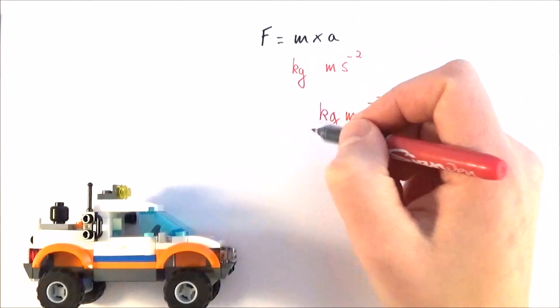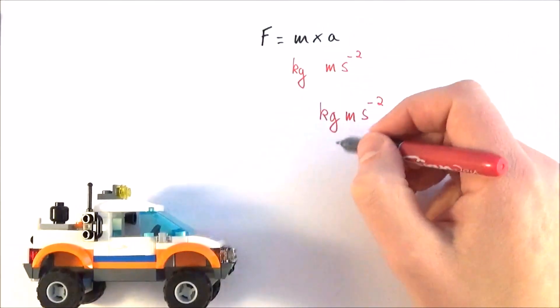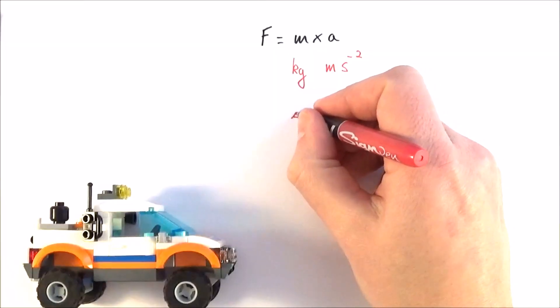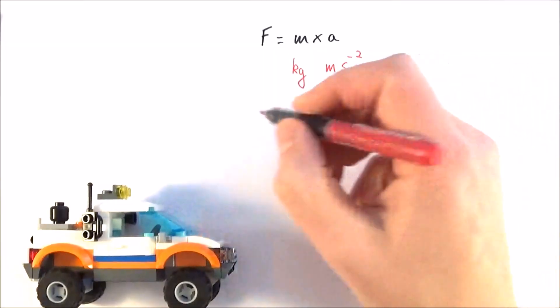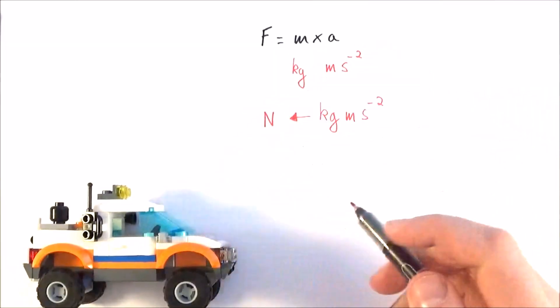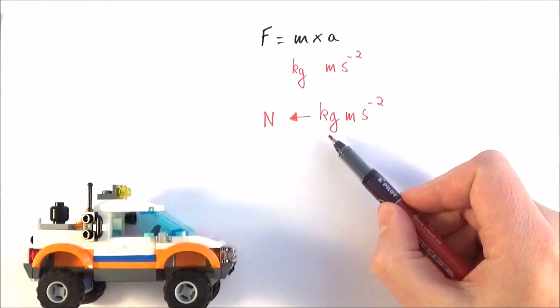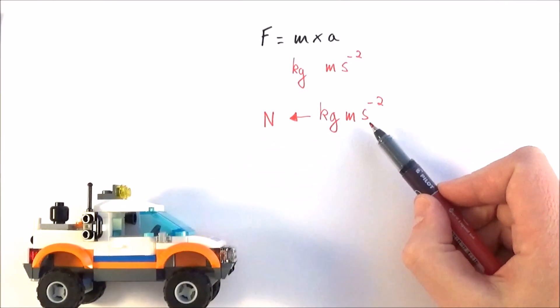That's a bit of a mouthful. We don't talk about the force of an engine in all these base units. So this gives rise to one of the derived units, which is the newton. So one newton is one kilogram for one metre, with one second to the minus two.